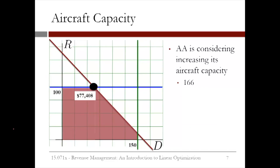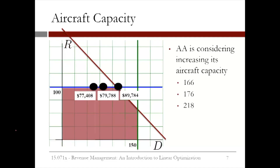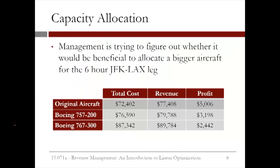For our analysis, let's assume that the demand does not change. If we increase our capacity to 176, the capacity constraint will move right, and our optimal solution will move right too. We now get a revenue of $79,788. If we then increase the capacity to 218 seats, the capacity constraint will move right again, and our revenue will increase to $89,784. With our current costs and revenue, the profit is $5,006. If we increase the capacity to 176 seats, our profit actually decreases to $3,198. And if we increase the capacity to 218 seats, our profit decreases even more to $2,442.